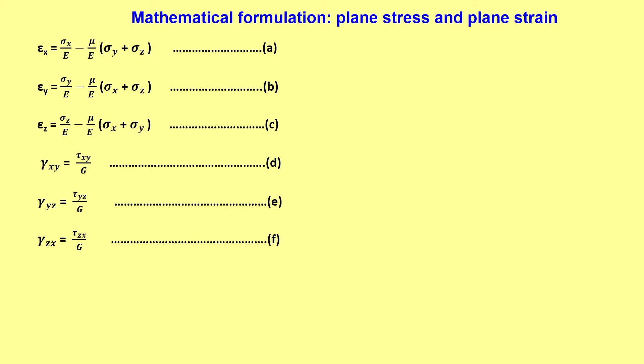Welcome back. In this lecture, we will see the mathematical formulation for plane strain and plane stress. In the last lecture, we discussed how a given 3D problem can be idealized to 2D cases — plane strain, plane stress, and axisymmetric condition. For a simple linear elastic isotropic case, we will see how the mathematical formulation of plane strain and plane stress would look like.